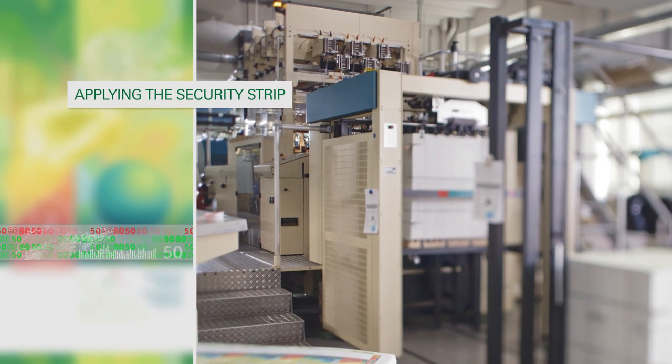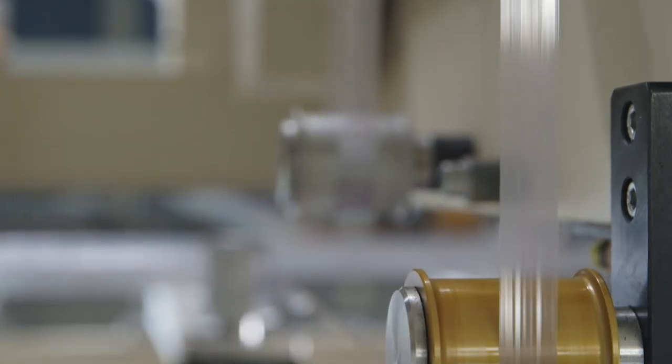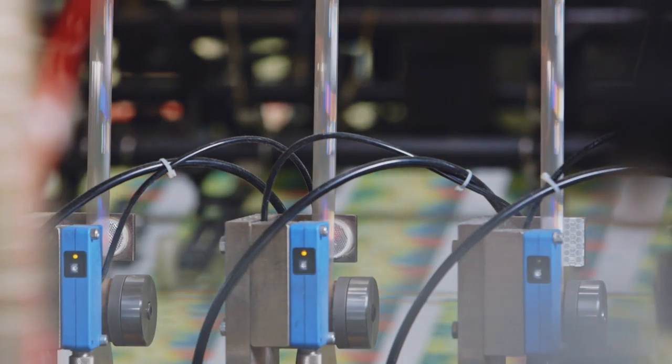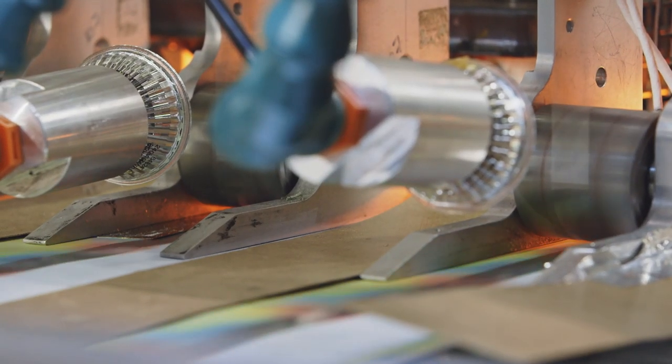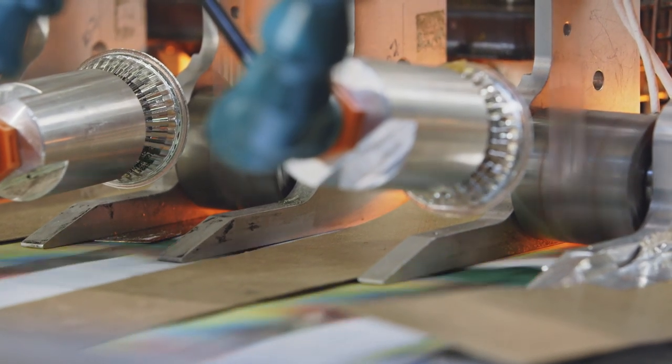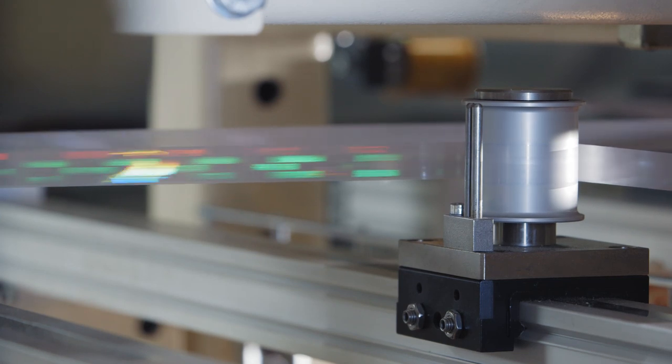An additional feature, the security strip, is integrated into the note using the foil application unit. The security strip is applied to the paper using a combination of pressure and heat. It consists of multiple layers and contains, among other things, red and green numbers.